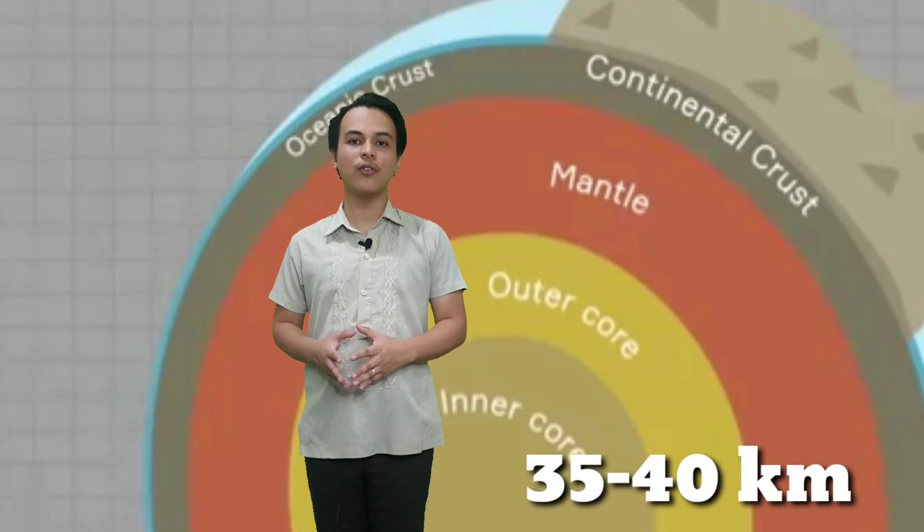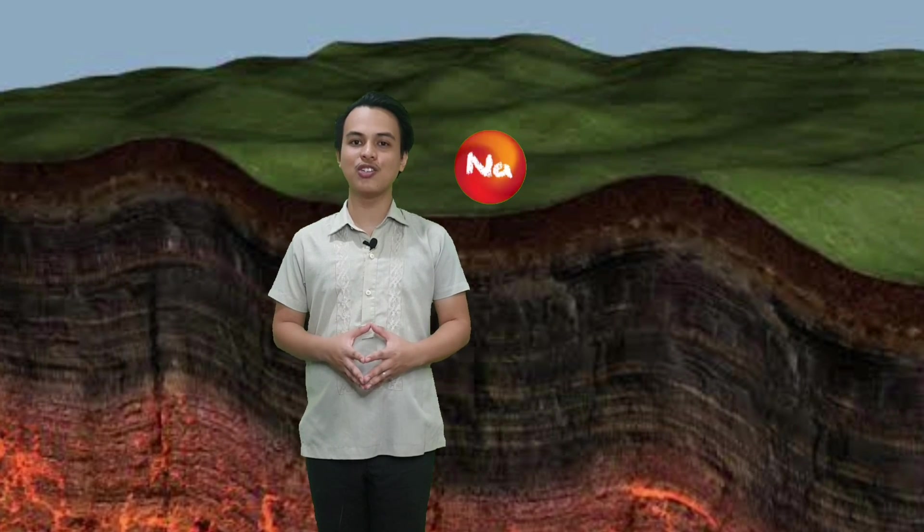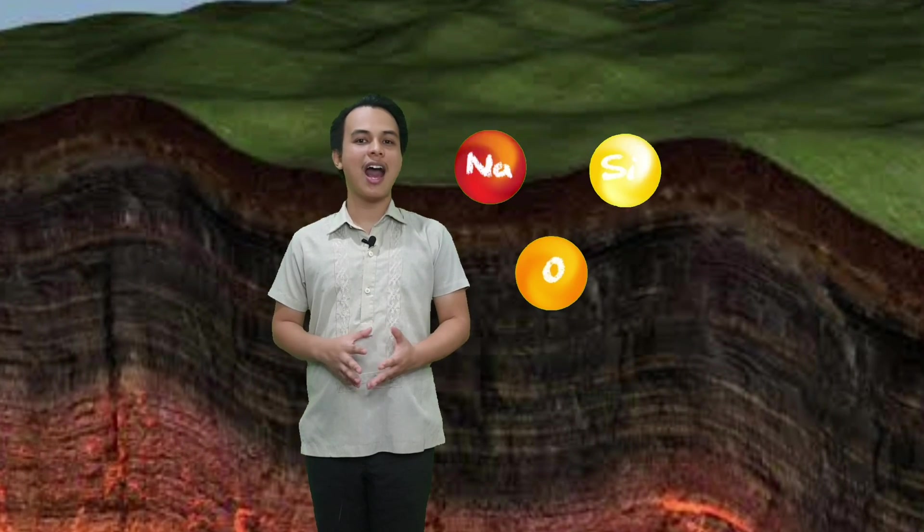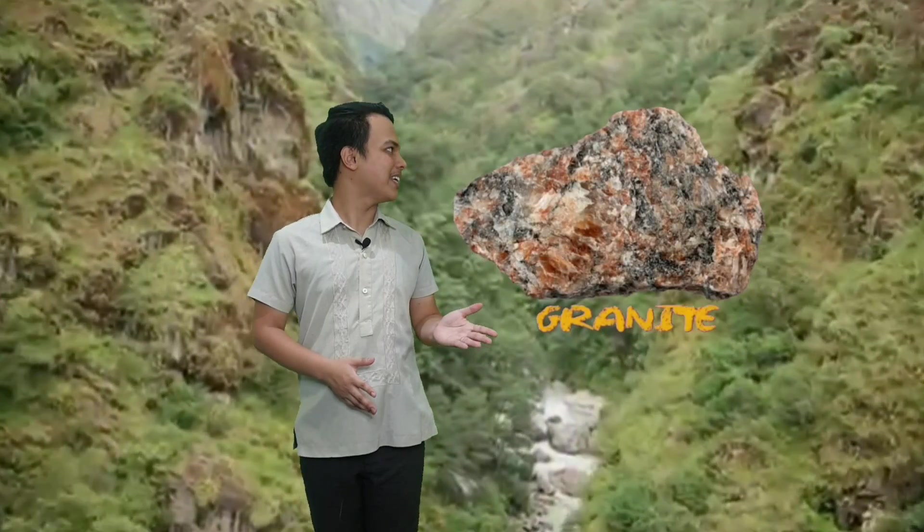The continental crust has a thickness of 35 to 40 kilometers and is mainly made up of the elements sodium, oxygen, silicon, aluminum, potassium, and calcium. Ang continental crust ay karaniwang natatagpuan under land masses and is made up of less dense rocks such as granite.